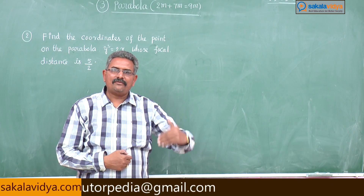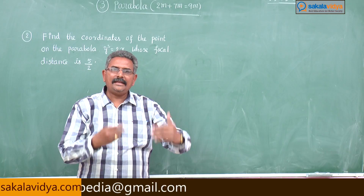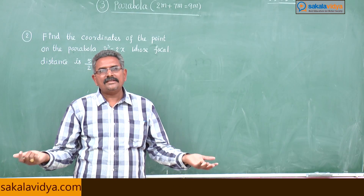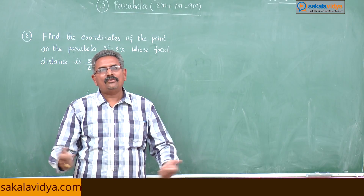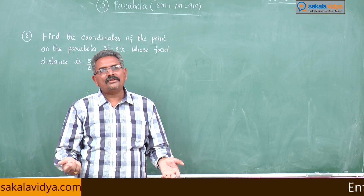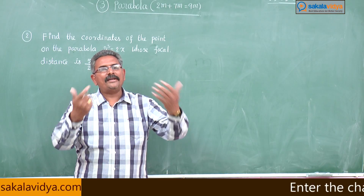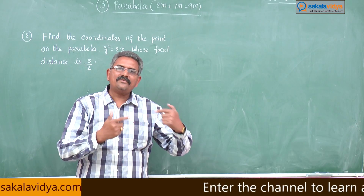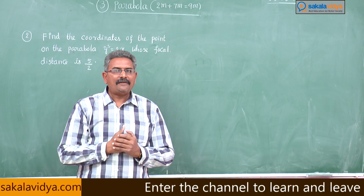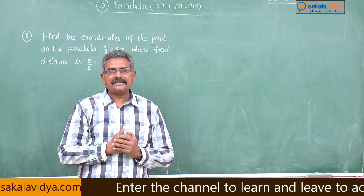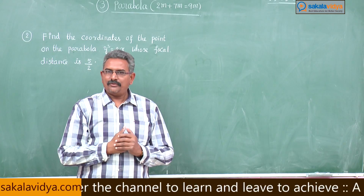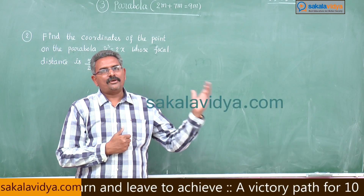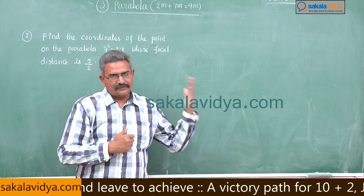Substituting the a value, we get x₁. Then substituting x₁ back into the parabola equation, we get the y-coordinate values. So we can determine the required points on the parabola whose focal distance is φ/2. Let us proceed with the problem.